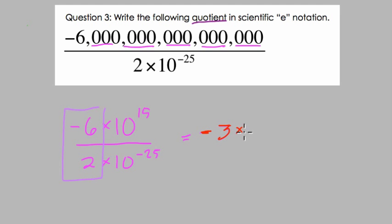So we have negative three times ten to the fortieth. Now, how do I get that? Well, fifteen minus negative twenty-five, right? Fifteen minus negative twenty-five, that equals fifteen plus twenty-five, which is forty.